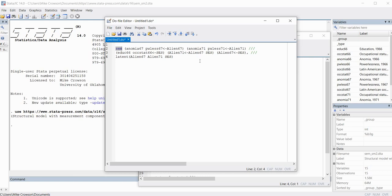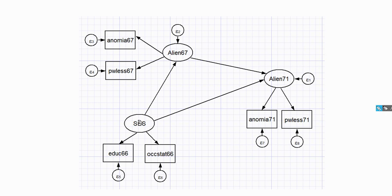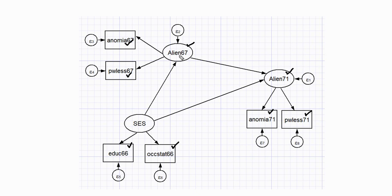There are a couple of components to this model. Going back to our diagram, we have SES being indicated by Educ66 and occupational status 66; Powerlessness67 and Anomia67 as indicators of Alien67; and Anomia71 and Powerlessness71 as indicators of Alien71 — that is the measurement portion. Then the paths running from SES to Alien67, SES to Alien71, and Alien67 to Alien71 represent the structural portion of the model.